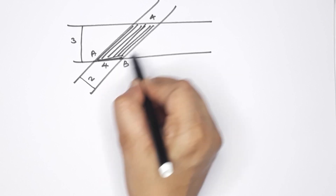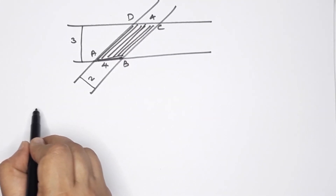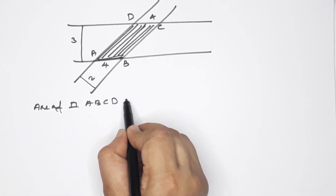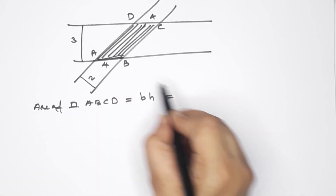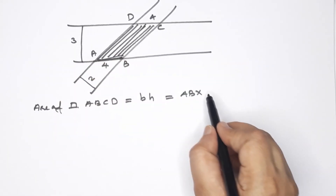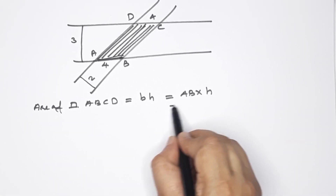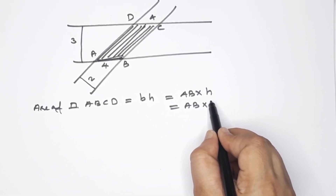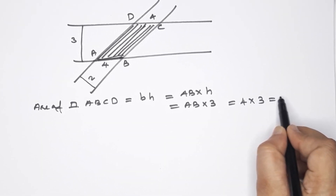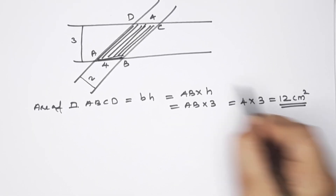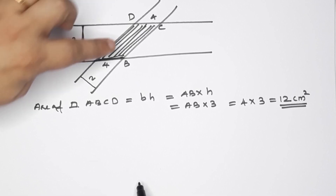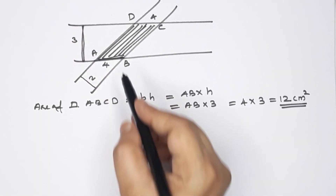I will name the vertices A, B, C, D. The base is 4 and the height is 3. That means 4 into 3 is equal to 12 square centimeters. This is the parallelogram area.